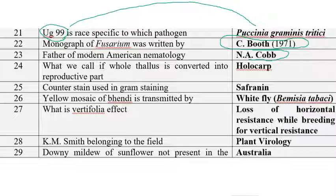If the whole thallus is converted into a reproductive part, that is called holocarpic. If the entire thallus is converted into a reproductive structure, it is holocarpic. Eucarpic means only a partial amount of thallus is converted into a reproductive part, not the entire thallus.